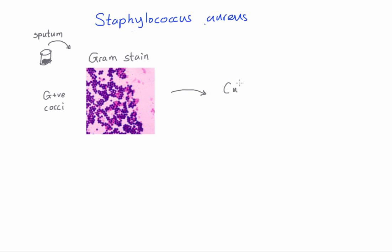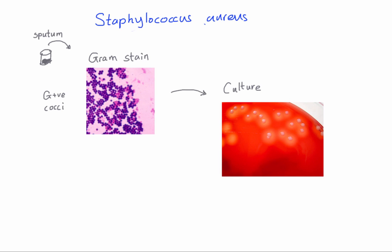Second, we culture the sample on blood agar — a gel mixed with blood containing RBCs. If our sample contains Staph aureus, we see two things: first, golden colonies (aureus means golden in Latin); and second, a transparent halo around the colonies where the RBCs have been completely broken down. That's called beta hemolysis. So remember, Staph aureus forms golden colonies and causes beta hemolysis on blood agar.